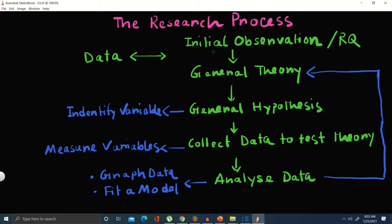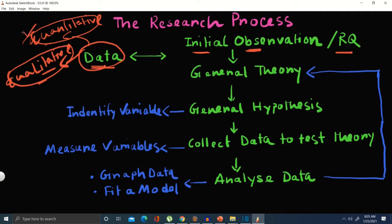Now the research process starts with initial observation or research question. How do we start our initial observation? By looking at the data. We'll discuss quantitative and qualitative data types in the next tutorial. But in this video, we're going to discuss how we can start our process. By looking at the data, we can formulate our research question.